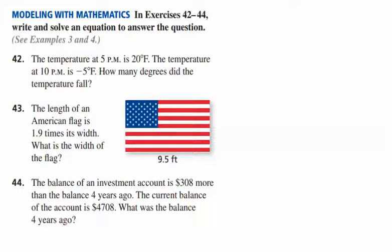So in problem number 42, we know that the temperature at 5 PM is 20 degrees Fahrenheit. The temperature at 10 PM is negative 5 degrees Fahrenheit, and we want to find out how many degrees did the temperature fall.